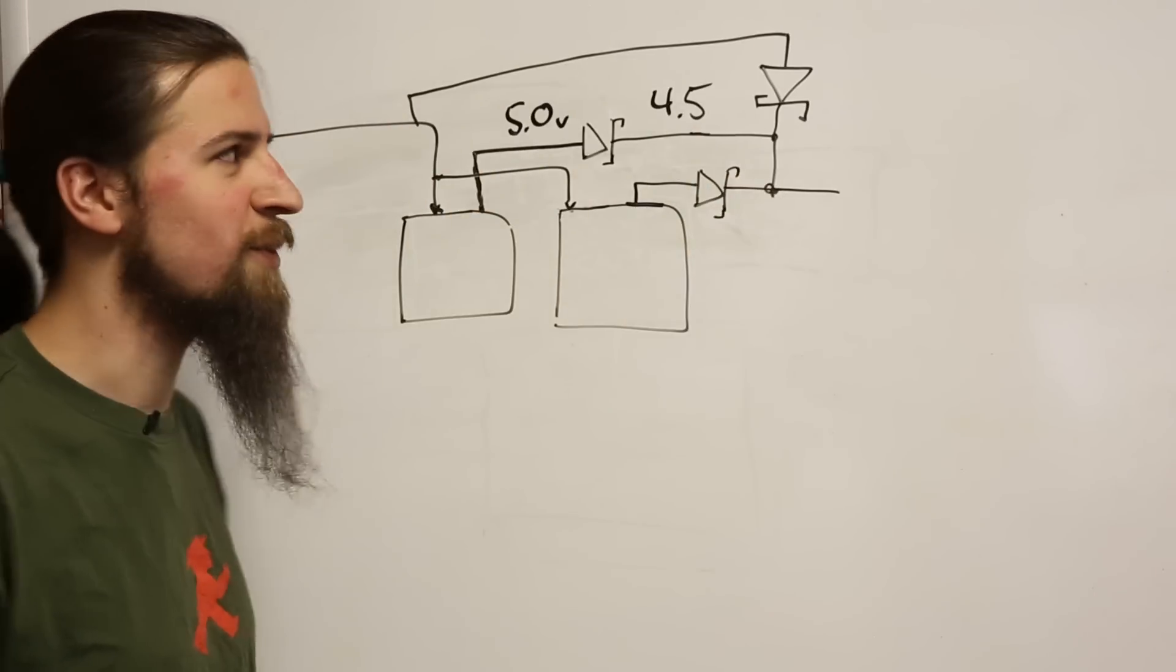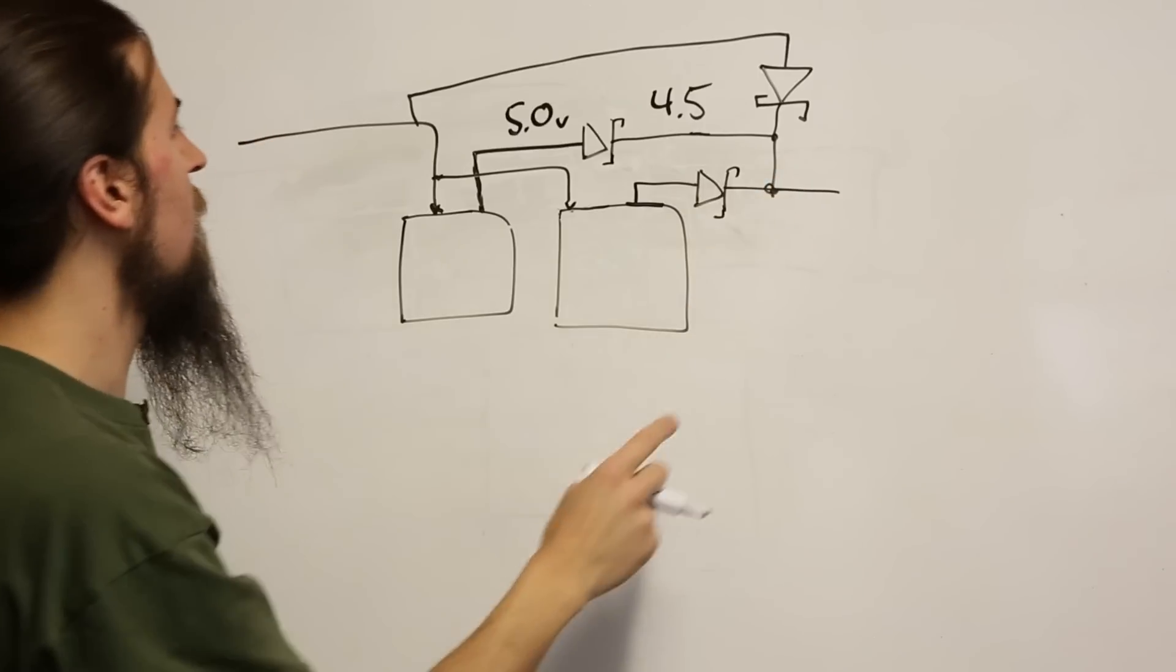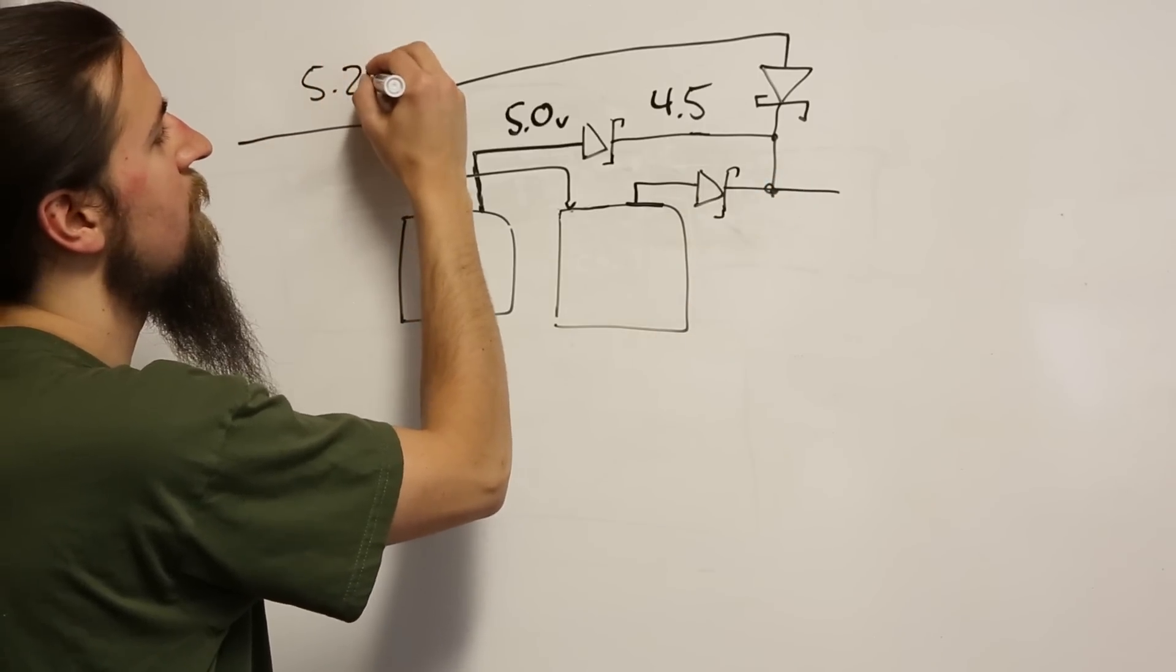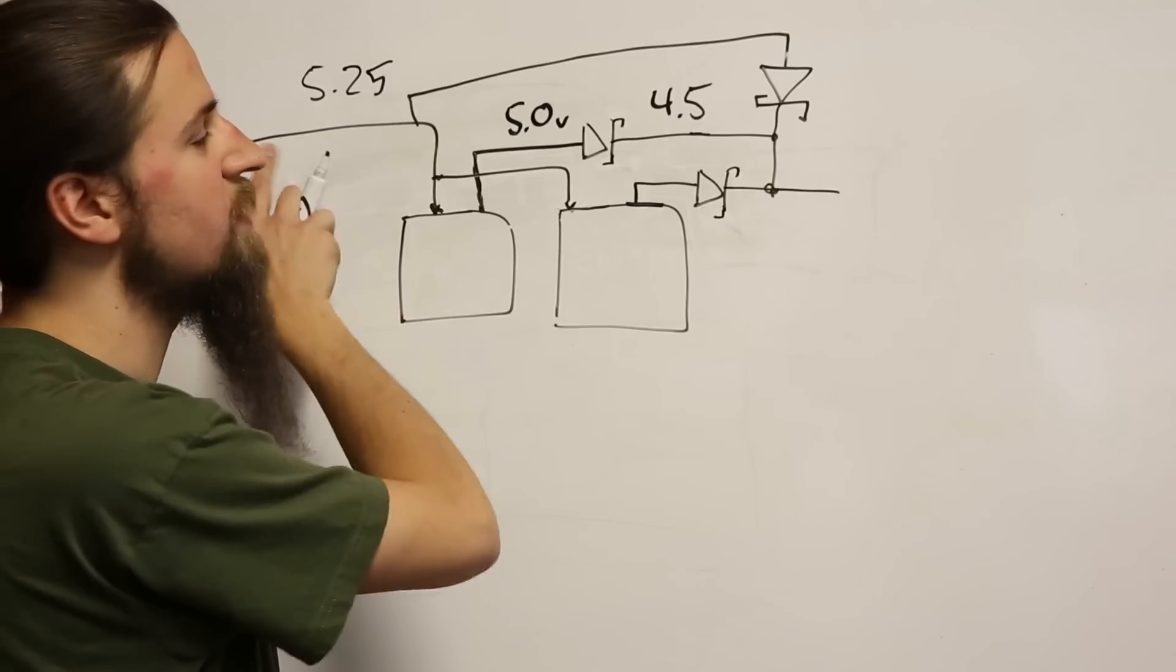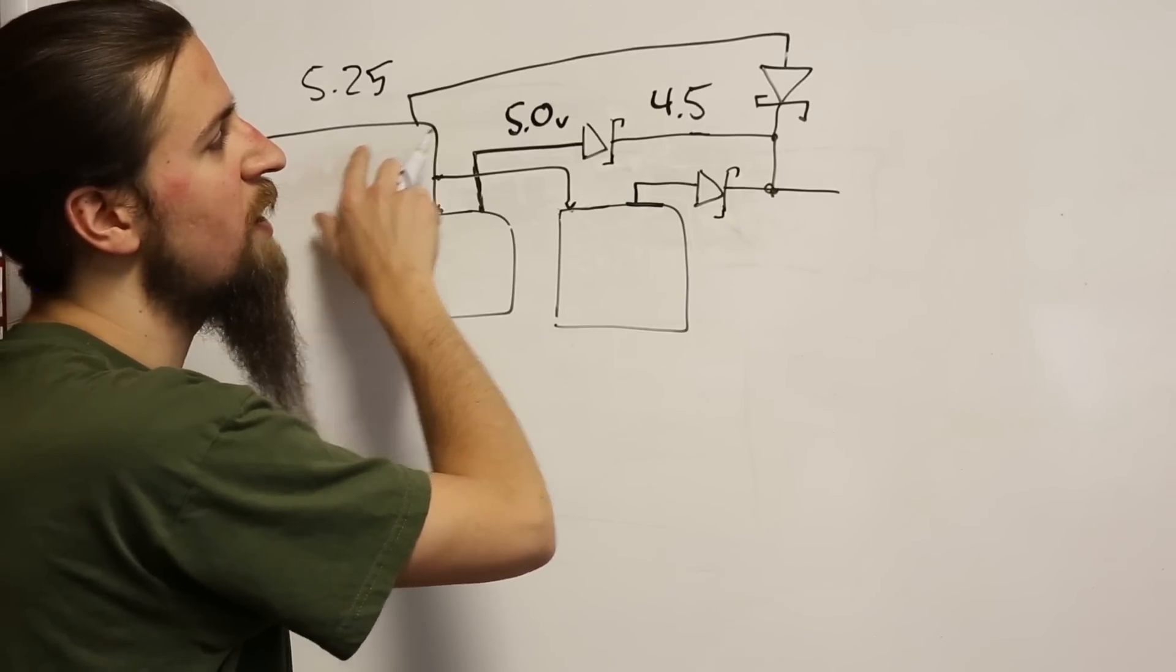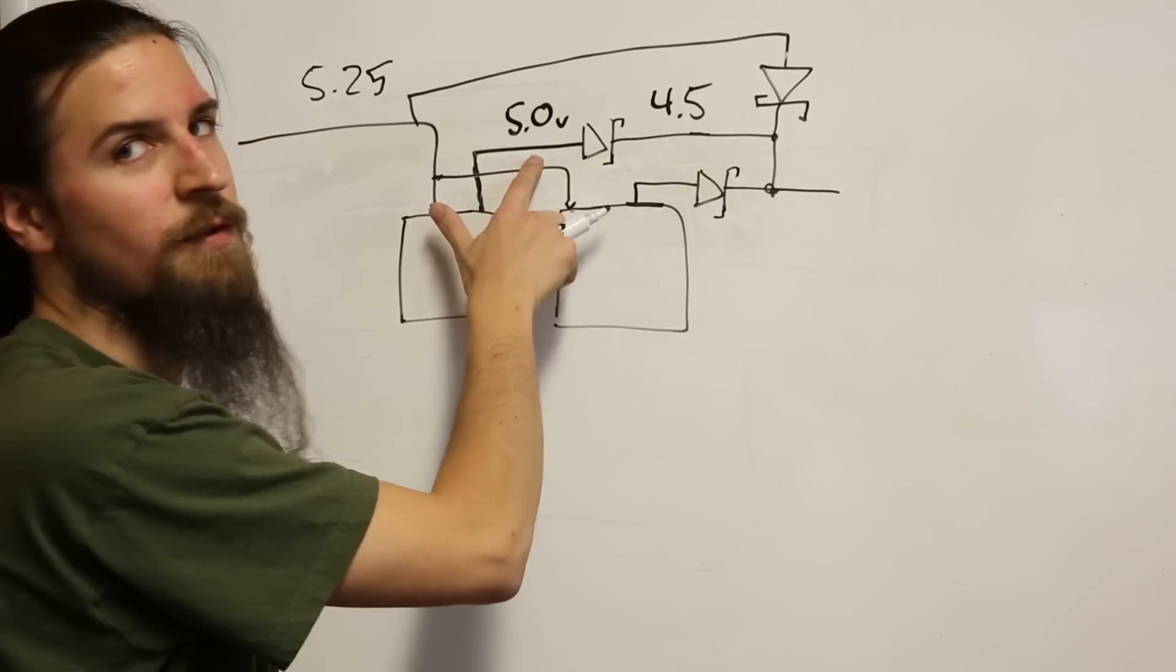As we go, we realize we'd rather have the current go through here when we apply it from the wall. So we'll choose our 5.25 volt supply that comes with the PI3. This ensures that when the voltage from the supply is present, the current would much rather go through this diode than through these diodes from the 5 volt supplies.